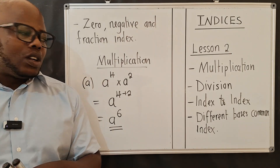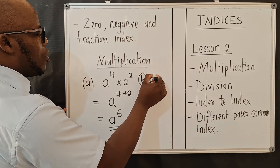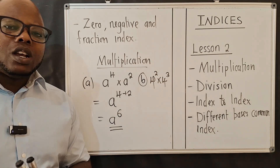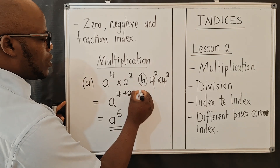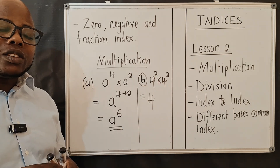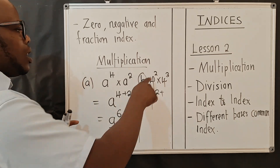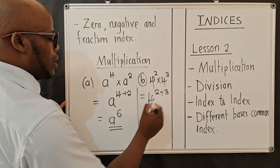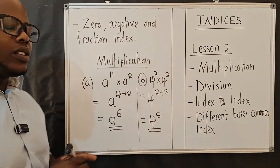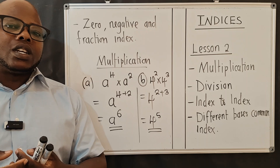Another example: let's say you've got 4 to the power 2 times 4 to the power 3. The bases are the same, so you add the powers — that is, 2 plus 3 — which gives you 5. So the answer is 4 to the power 5. This is what multiplication does.